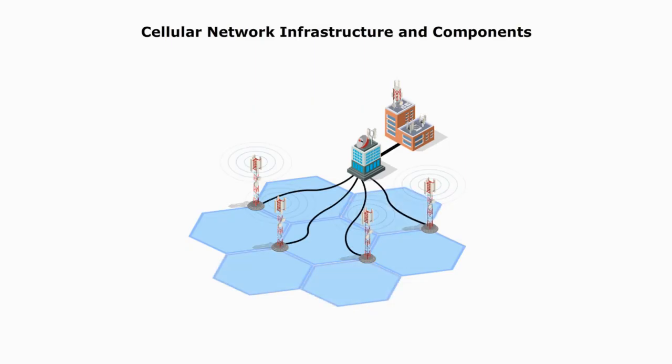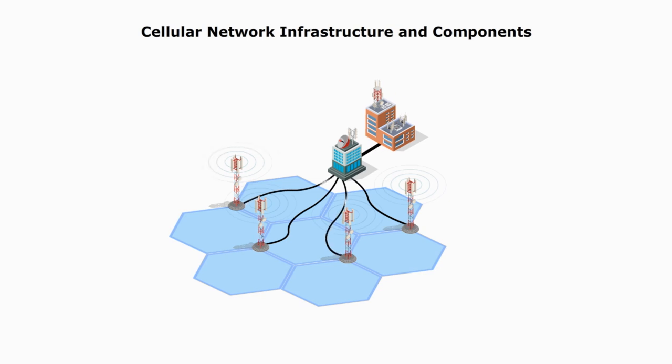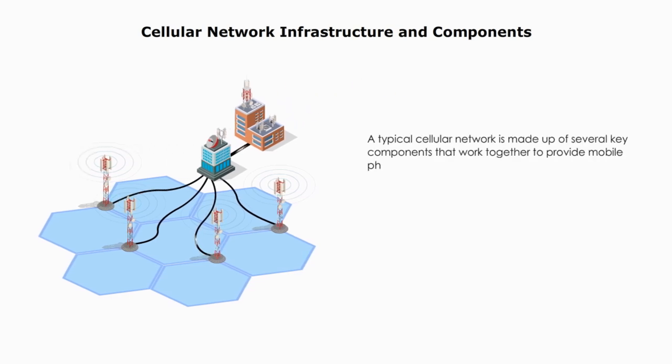First, let's see cellular network infrastructure and components. A typical cellular network is made up of several key components that work together to provide mobile phone service.